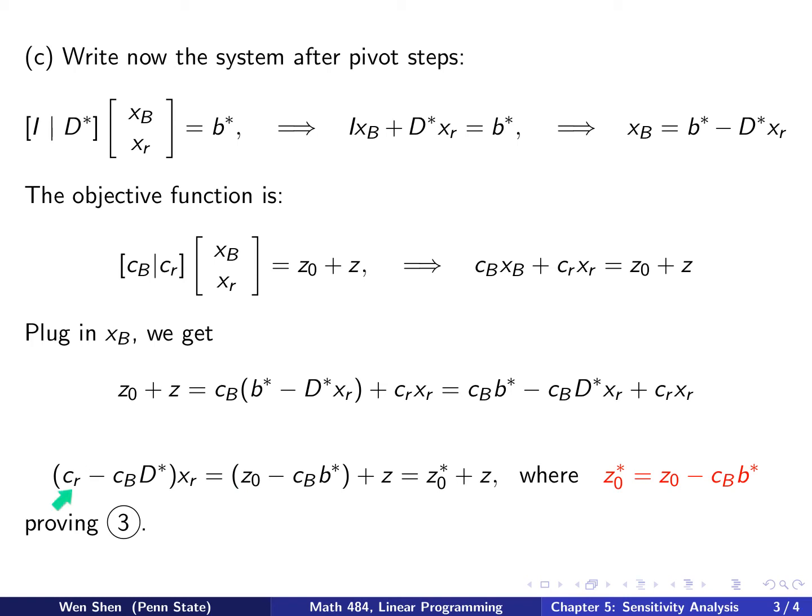This will be the objective function at the end after pivoting. This term would actually be the z naught star. We can write this as z naught star plus z, and z naught star exactly equals that. This part in red is exactly claim number three, and we just proved it.